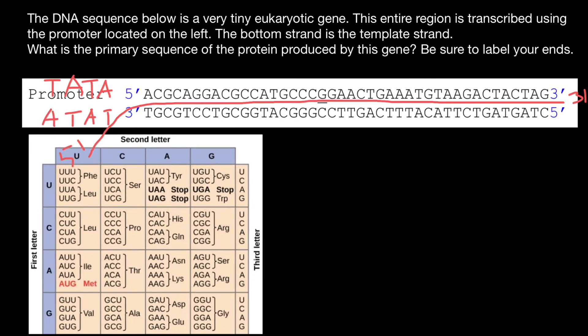You should not learn the codon table by heart, but you probably have to know that the start codon is AUG, and you probably have to know the three stop codons — that's what some professors would expect you to know. So for the beginning, we have to find AUG in the coding strand. In the coding strand, this start codon would be slightly different: uracil in the coding strand of the DNA would be thymine. So let's find ATG in this coding strand of the DNA, going from the five prime end to the three prime end, just like messenger RNA grows continuously.